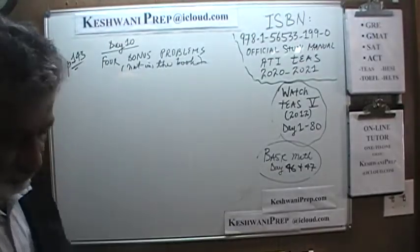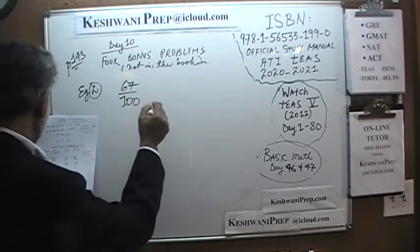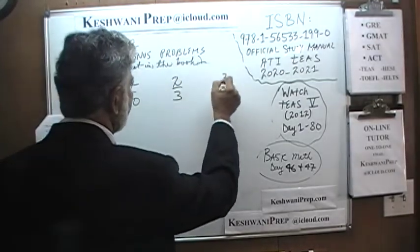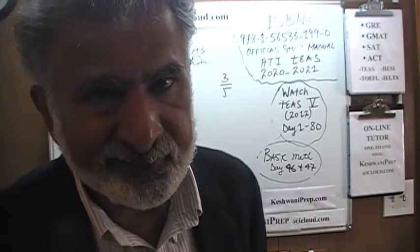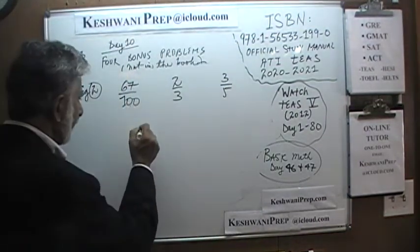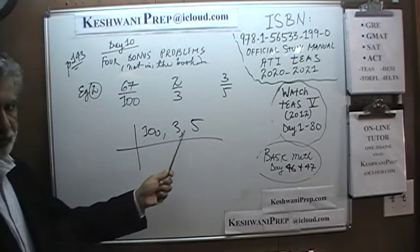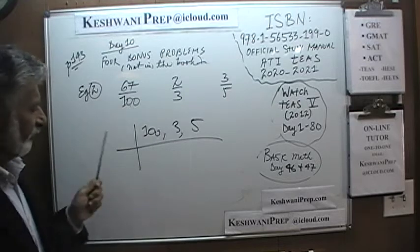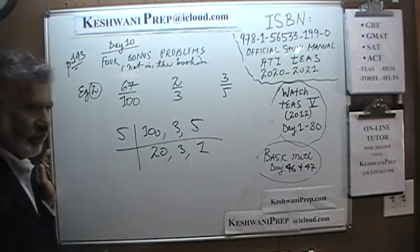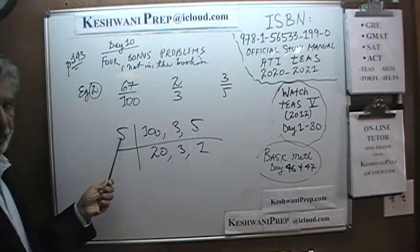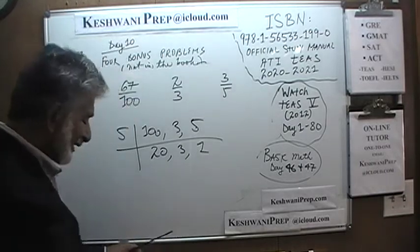Sixty-seven over one-hundred, two-thirds, and three-fifths. The first thing we have to do is find the least common multiple. The way we find the LCM is to write them down: one-hundred, three, and five. If you can find any common factor between at least two of these three numbers, we can start the process. I see a hundred, I see a five — let's divide by five. Hundred divided by five gives us twenty, three just comes down, and five divided by five is one. Five times three is sixty, sixty times five is three hundred. The least common multiple is three hundred.